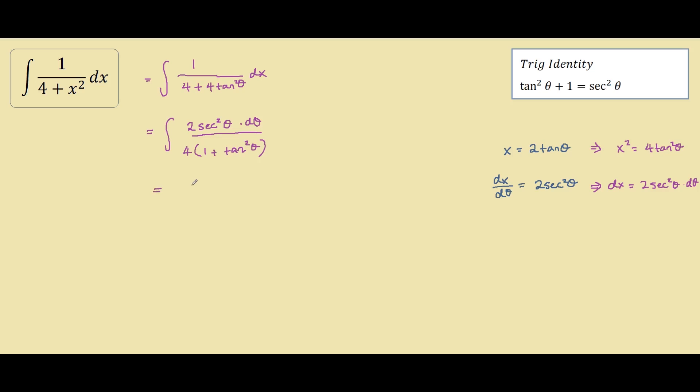Our next step will be using the trig identity. So we have 2 secant squared theta d theta on our numerator, and since we factored out the 4, there's 1 plus tan squared theta. We know from our trig identities that tan squared theta plus 1 equals secant squared theta, and the numerator and denominator cancel out for secant squared, and we're left with half.